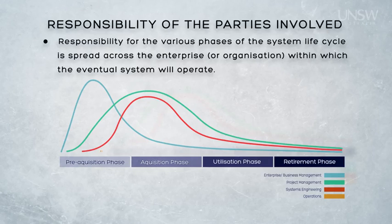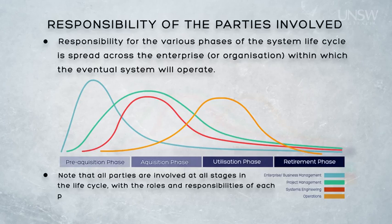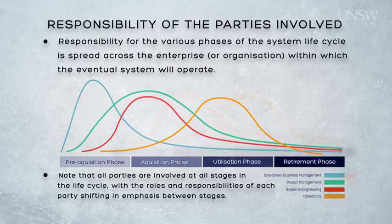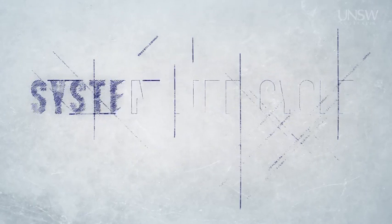Once the acquisition is complete, the system is introduced into service and is operated by the users and supported by the support element. These people have been involved earlier in the acquisition phase — they provided essential input to the systems engineering and the project management processes, but now they're principally responsible. Like all parties involved, they are involved in all phases of the life cycle, but the roles and responsibilities for each party shifts in emphasis between those phases.